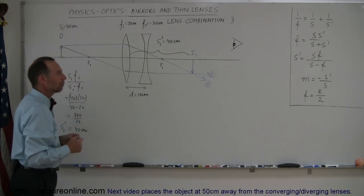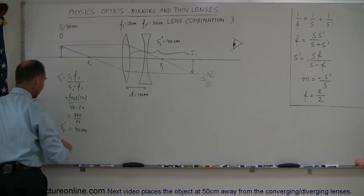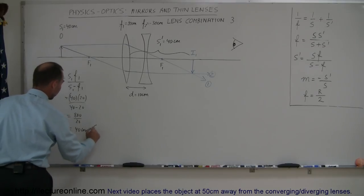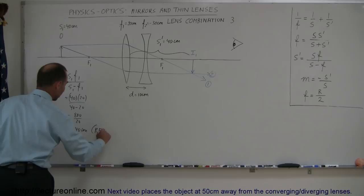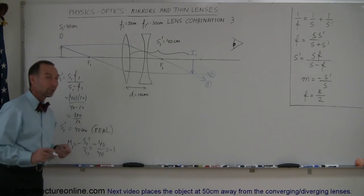Before we do that though, I like to calculate maybe the magnification of the first lens. So first of all, this is a real image and the magnification m1 is equal to minus s1 prime over s1, which is minus 40 divided by 40 which is minus 1.